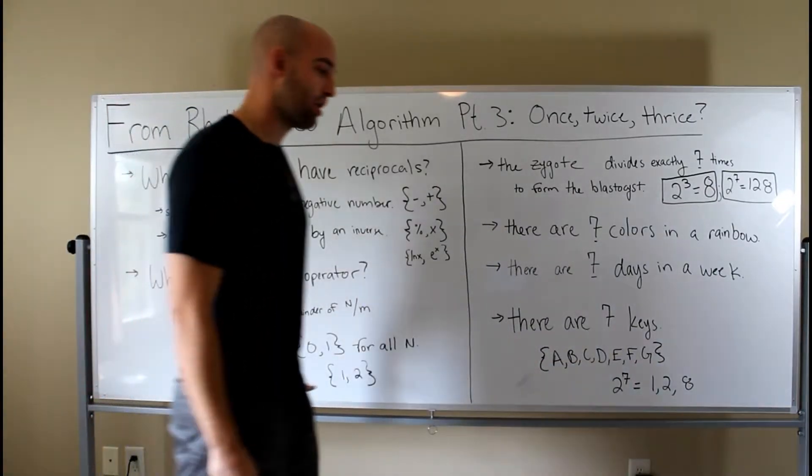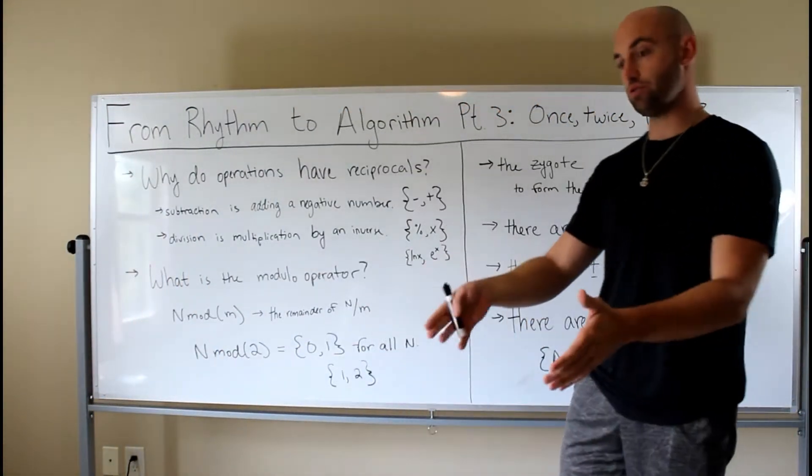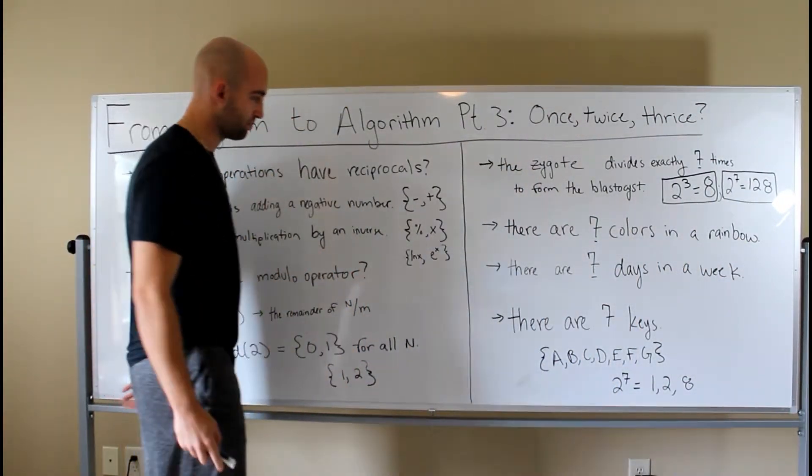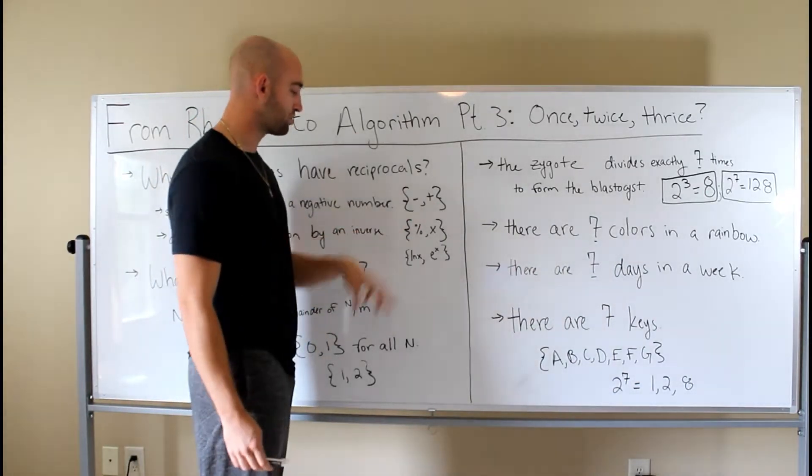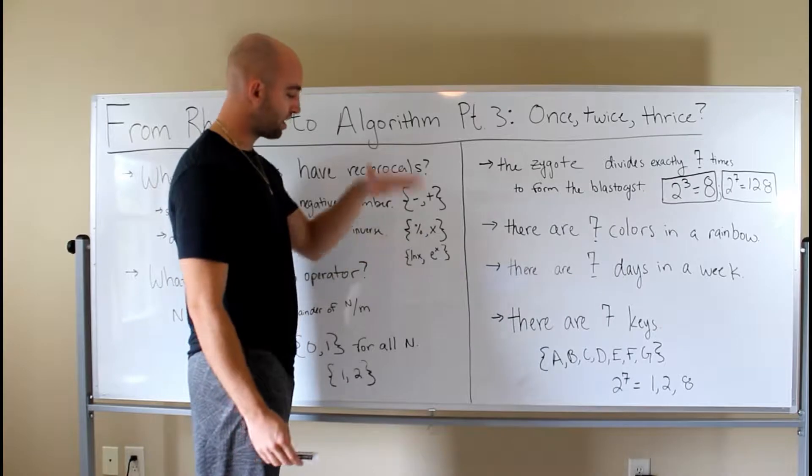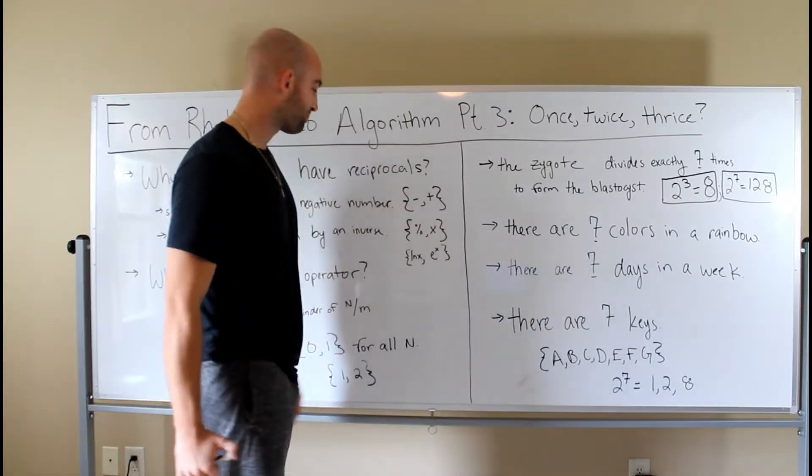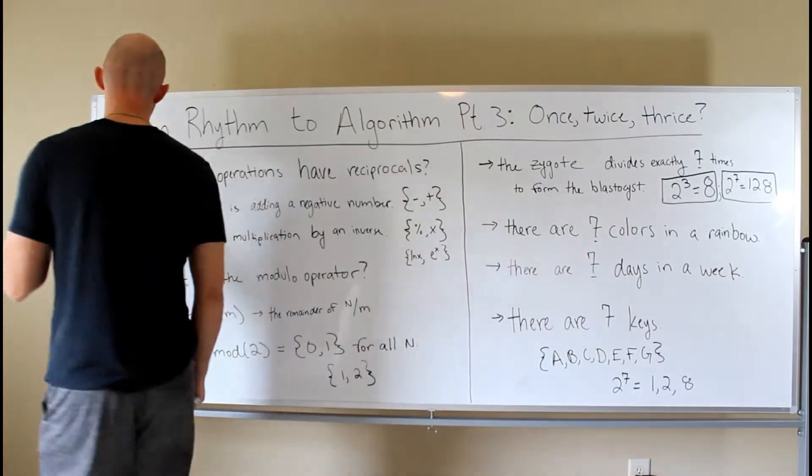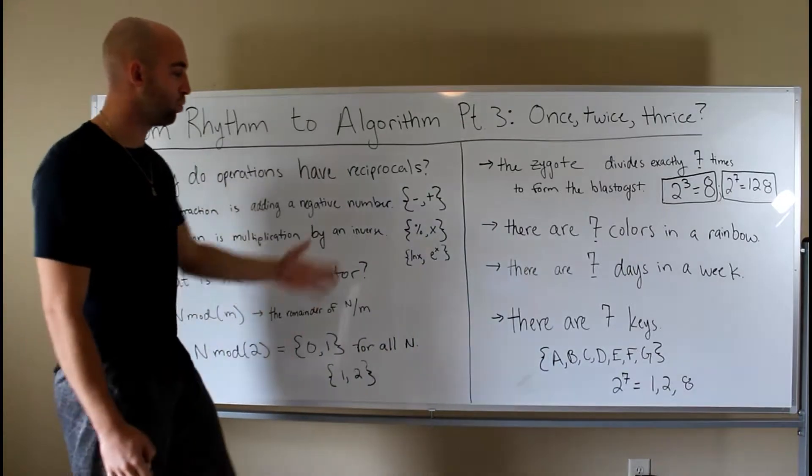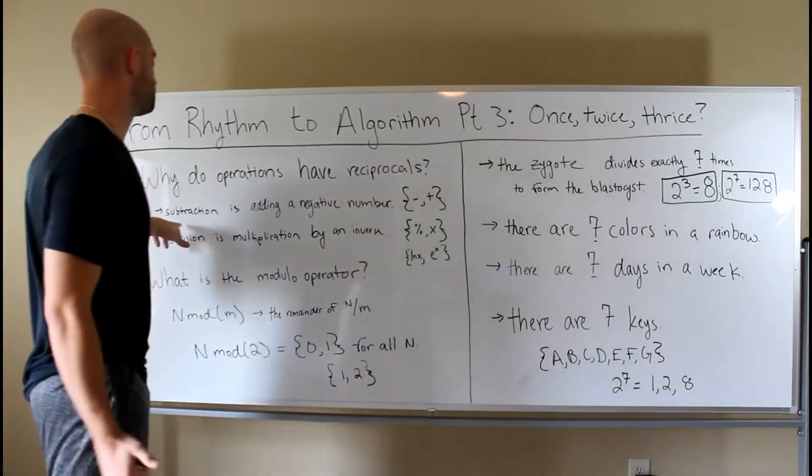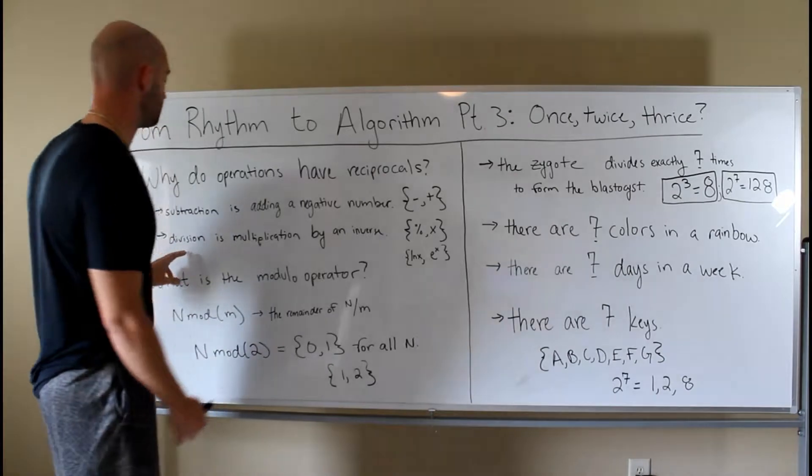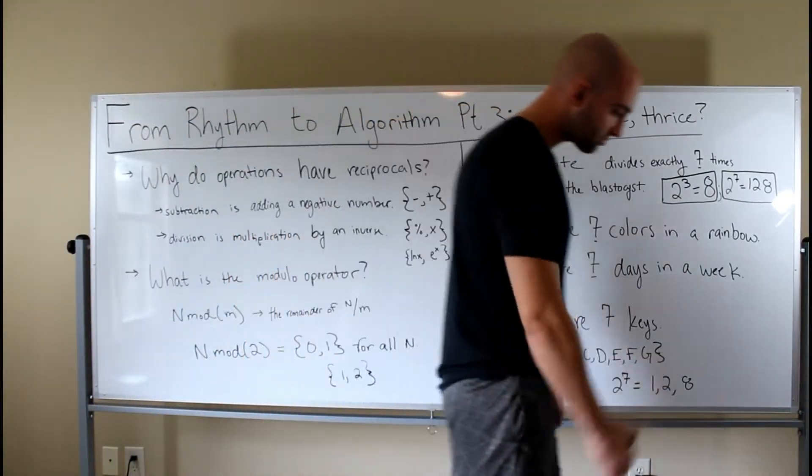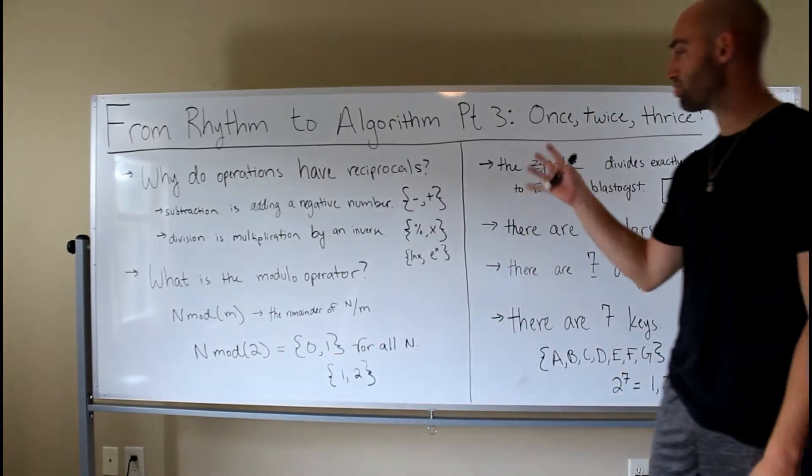So we're going to ask the question, what is an operator? Well, an operator is just a symbol or a sign that tells you what to do to another number or set. And we have a finite amount of them. You can add or subtract, you can divide or multiply, or you can exponent, or you can take an exponent or a logarithm. And that just tells you what to do to a function. And I want you to ask yourself, why do operations have reciprocates? Why can you view subtraction as adding a negative number? And why can you view division as a multiplication by an inverse?